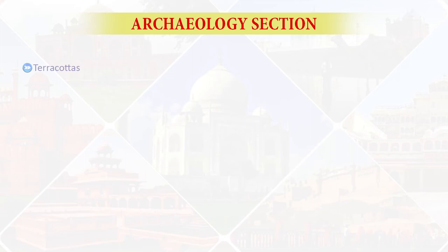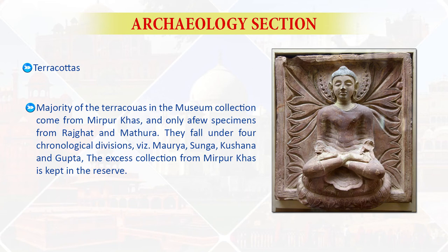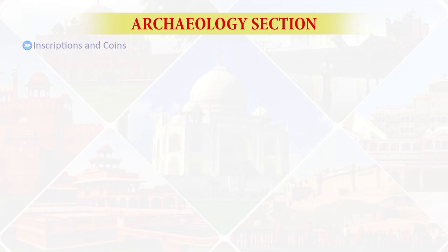There are also some images of the Chola period. You must remember that the minimum skill required is the knowledge of history, particularly art history, and you must read authentic books to update yourself. Next are terracottas. The majority of the terracottas in the museum collection come from Mirpur Khas, with only a few specimens from Rajghat and Mathura. They fall under four chronological divisions: Maurya, Shunga, Kushana, and Gupta.